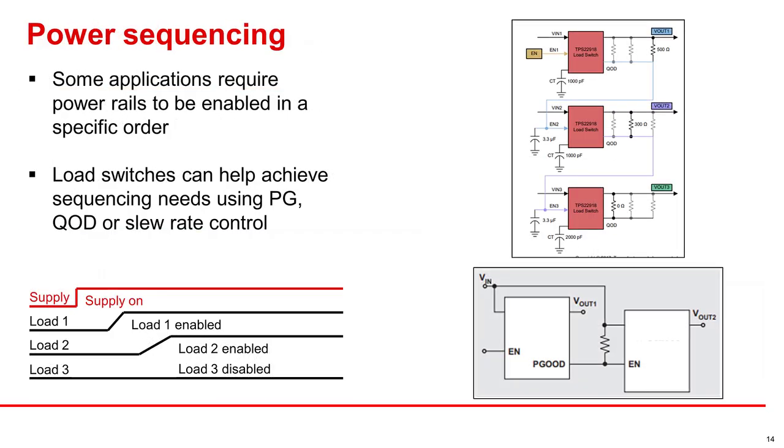Power sequencing is important for some applications that require specific rails to be enabled before or after other rails are turned on. The PG pin or the QOD pin can help with sequencing. We briefly explained earlier how the PG pin can prevent another device from turning on until that device's output rises first. But you can also use the QOD of device one to ensure that device two's rail is held at zero volts until device one's enable pin has risen above its rising threshold. You can see this in the figure on the right.